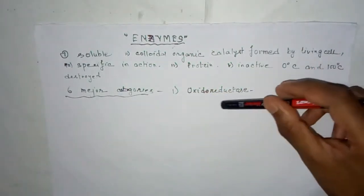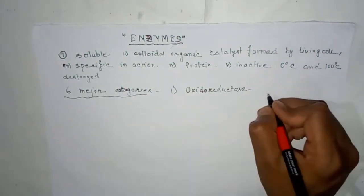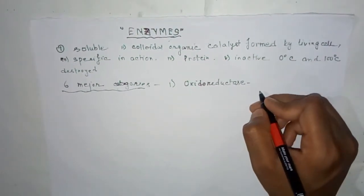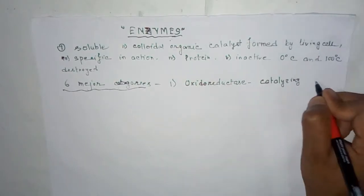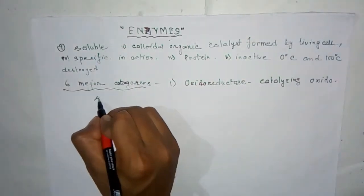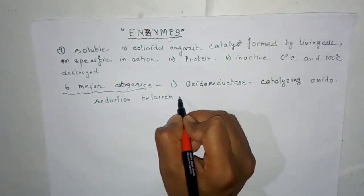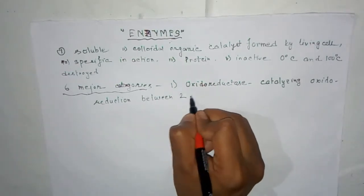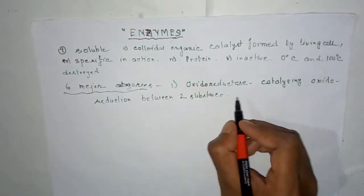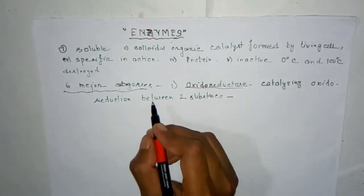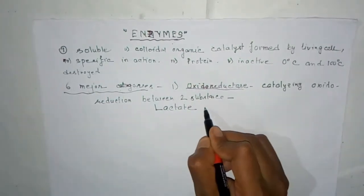Number one, oxidoreductase. These enzymes catalyze the oxidoreduction between two substances. An example of oxidoreductase enzymes is lactate dehydrogenase.